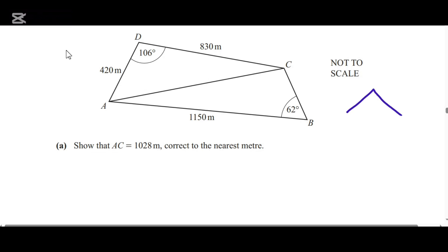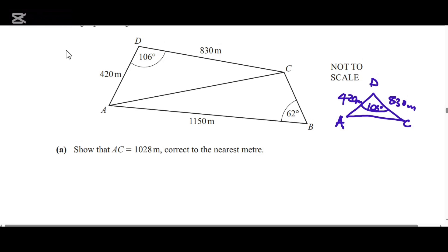So triangle ACD looks like this. We've been given 420 meters, 830 meters, and then we have 106 degrees here. Since we've been given side-angle-side, to find AC the side AC we're going to use the cosine rule.